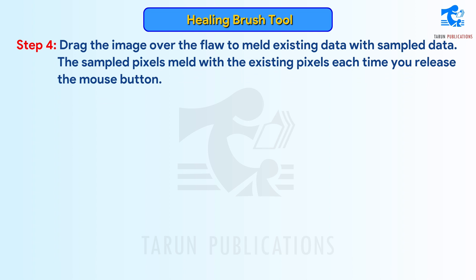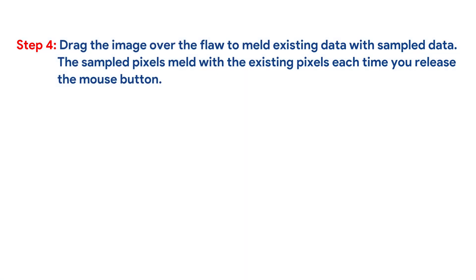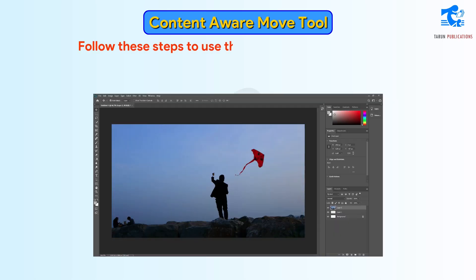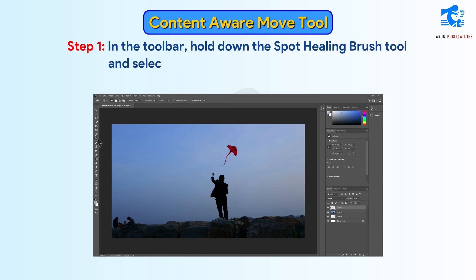Patch Tool. The Patch Tool lets you repair a selected area with pixels from another area or a pattern. Like the Healing Brush Tool, the Patch Tool matches the texture, lighting, and shading of the sampled pixels to the source pixels. You can also use the Patch Tool to clone isolated areas of an image. The Patch Tool works with 8 bits or 16 bits per channel. Follow these steps to use the Content Aware Move Tool. Step 1: In the Toolbar, hold down the Spot Healing Brush Tool and select the Content Aware Move Tool.